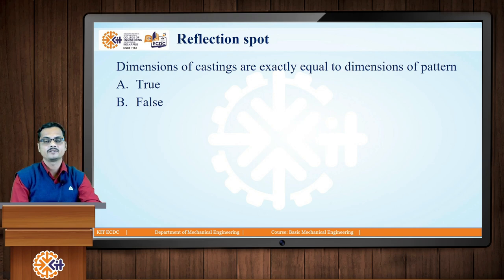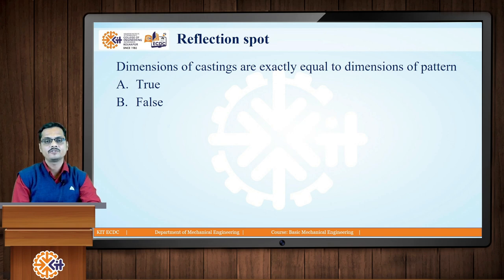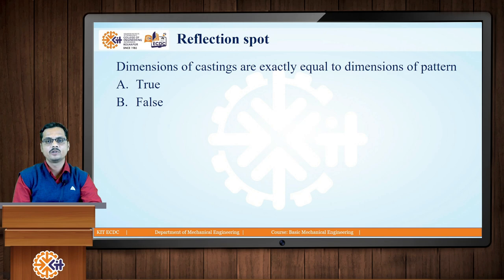Now based on this, let us try to understand the reflection spot. The question is on the screen — you have to say true or false: 'Dimensions of a casting are exactly equal to dimensions of a pattern.' The correct answer is that this statement is false. Dimensions of a casting are always smaller than the dimensions of a pattern, because shrinkage allowance is given to the pattern.